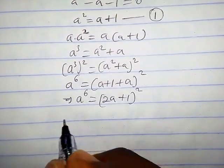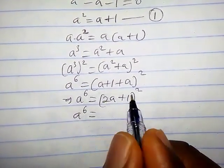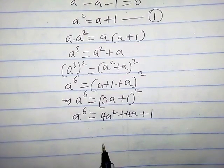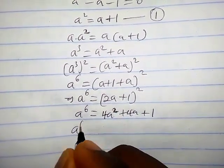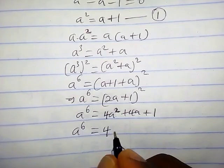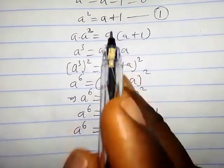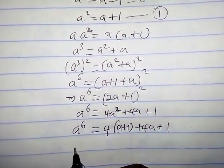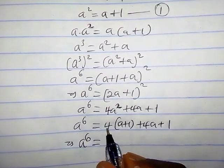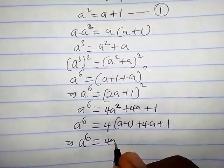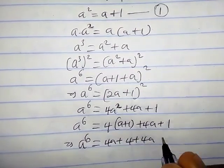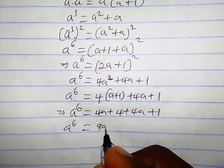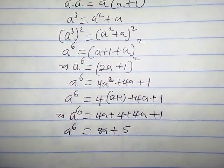So a raised to the six equals two a plus one, all squared. Expanding gives four a squared plus four a plus one. Substituting a squared equals a plus one, we get four times a plus one, plus four a plus one, which gives eight a plus five. So a raised to the six equals eight a plus five.